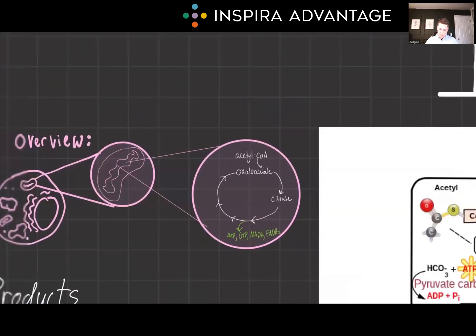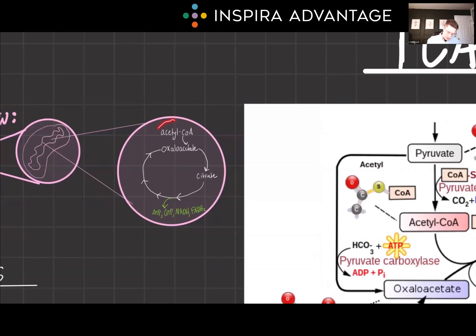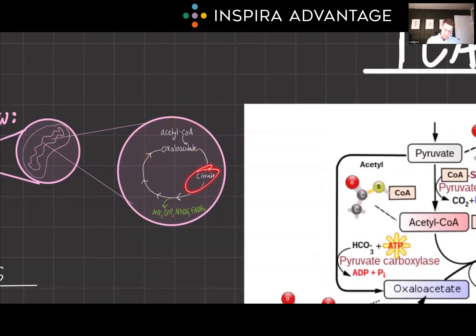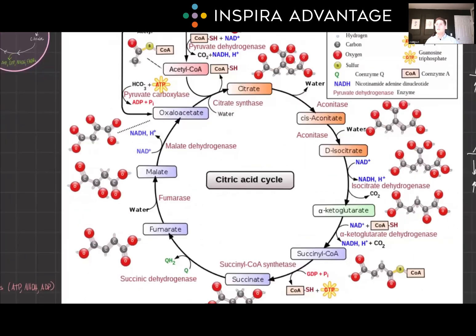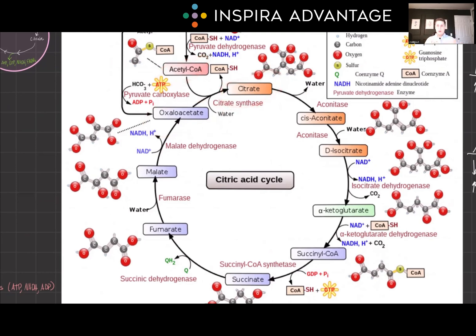It begins with acetyl-CoA combining with oxaloacetate to form citrate, a six-carbon molecule. The cycle then undergoes a series of eight chemical reactions involving redox, hydration, dehydration, and decarboxylation. These reactions eventually regenerate oxaloacetate to recombine with acetyl-CoA to form citrate again — so it's a cycle, and it's regenerative.